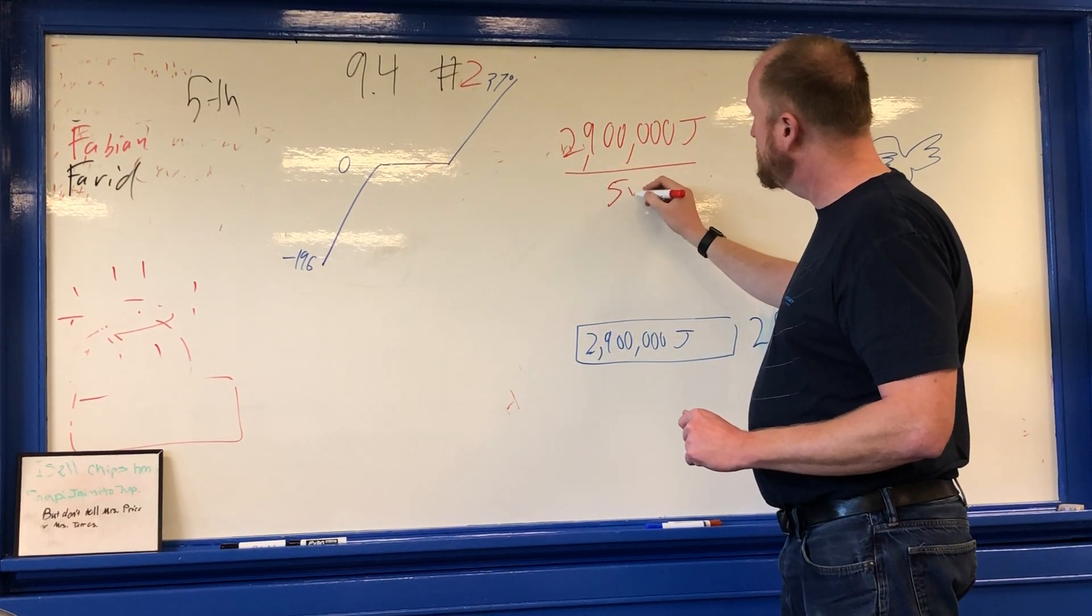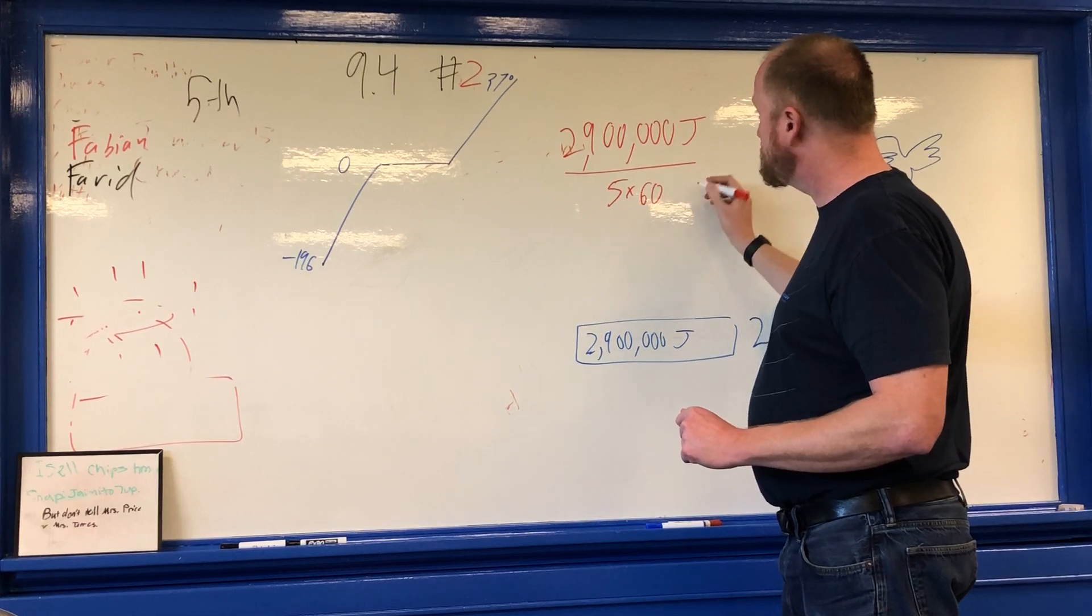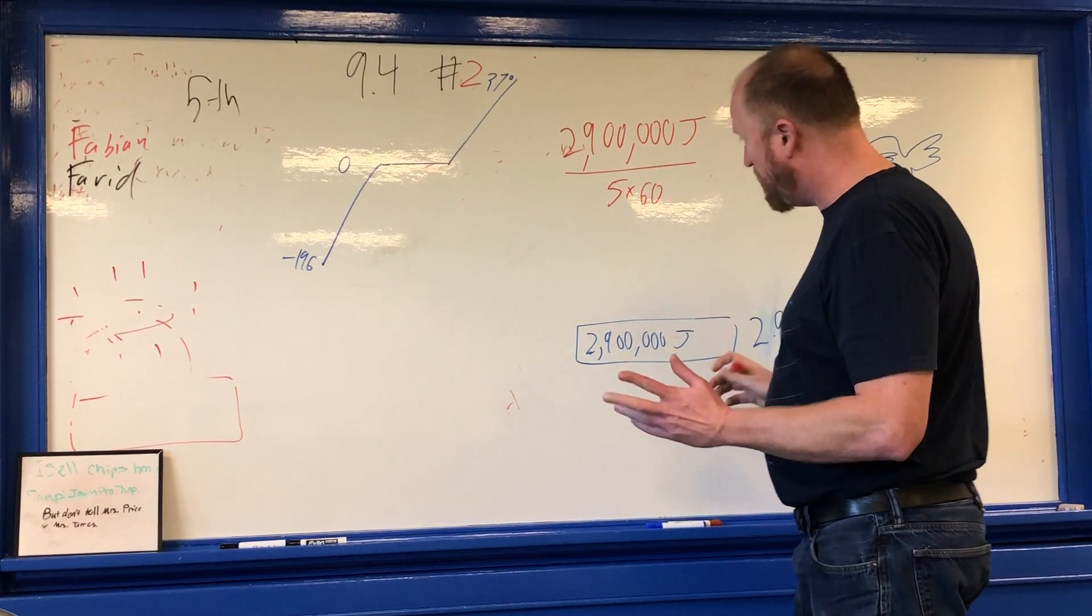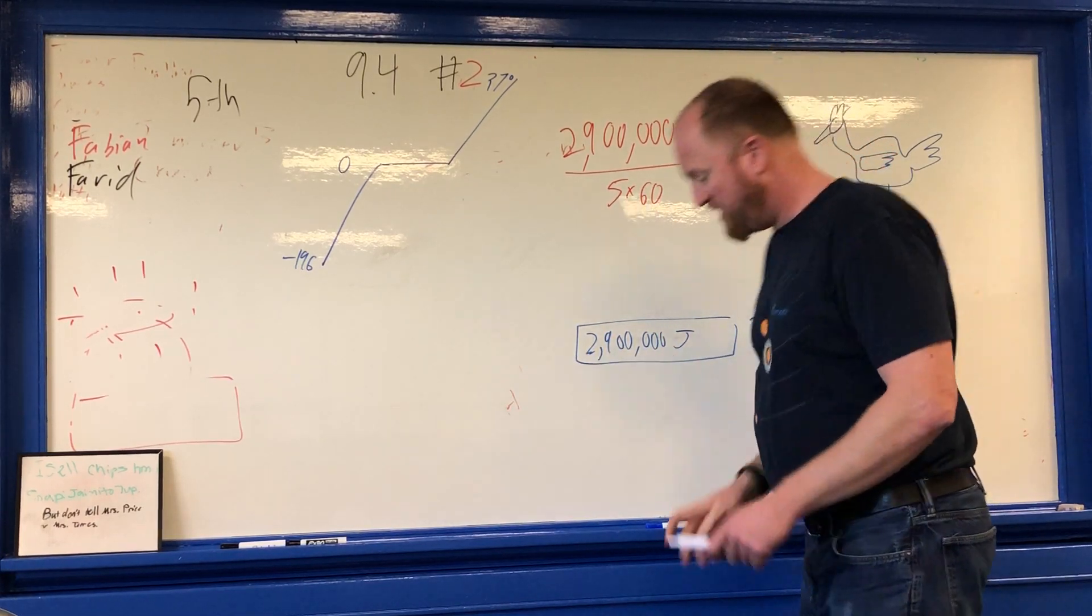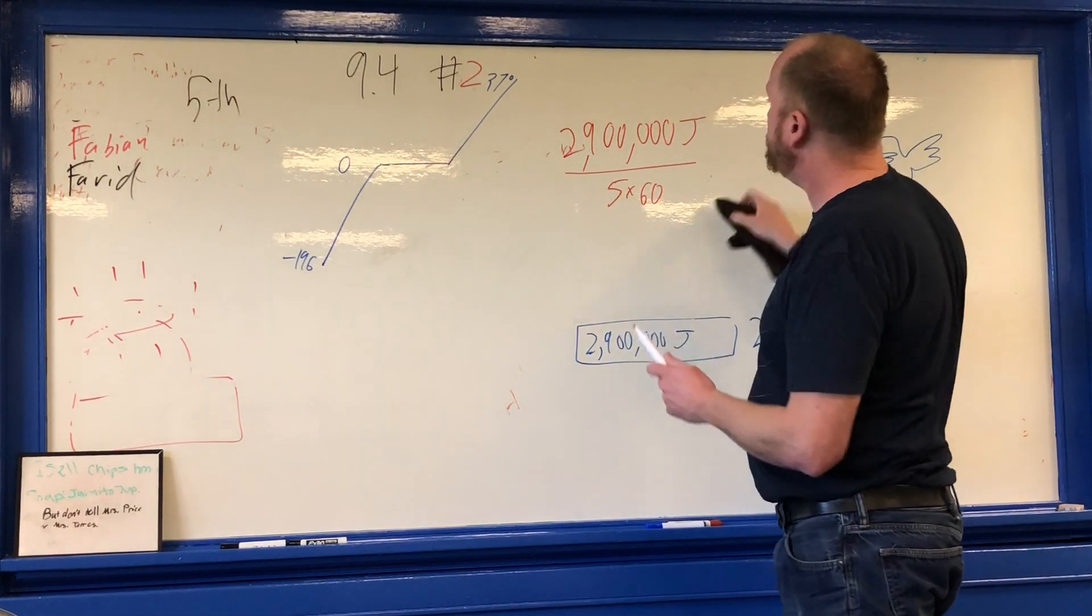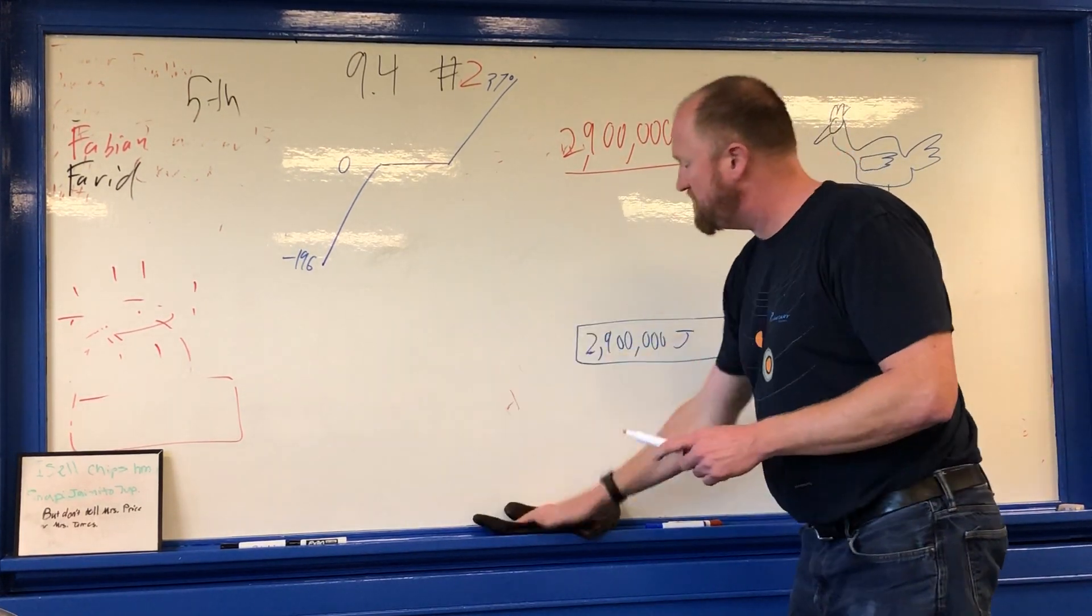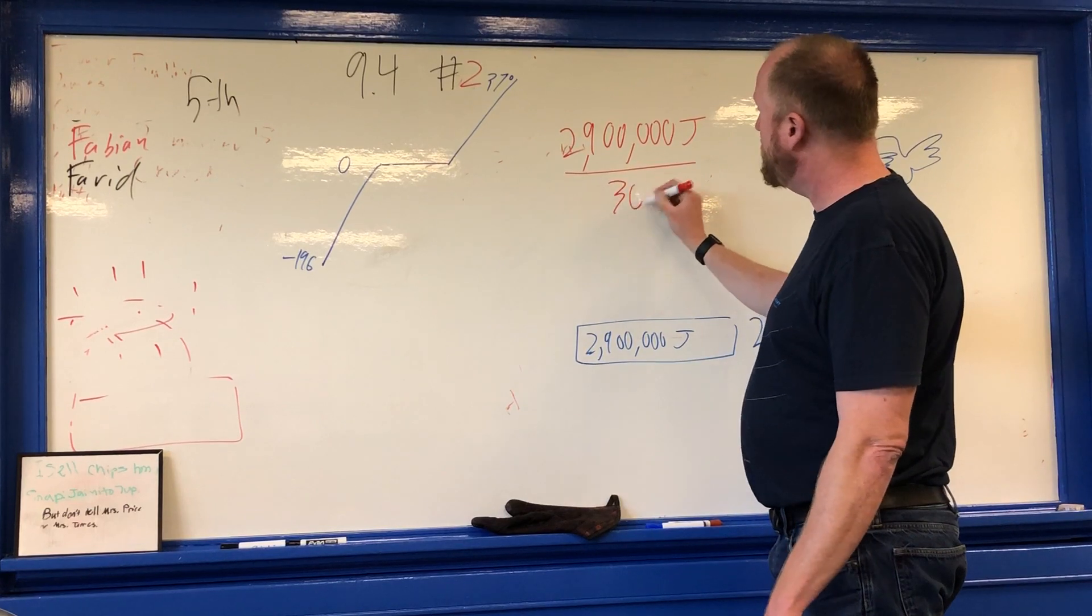Well, five minutes and there's 60 seconds each, right? So, in fact, it's 2.9 million divided by five times 60 is 300 seconds.